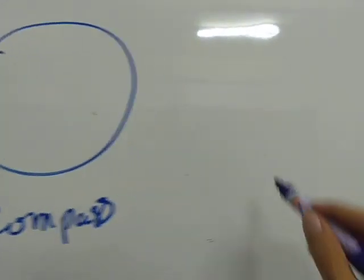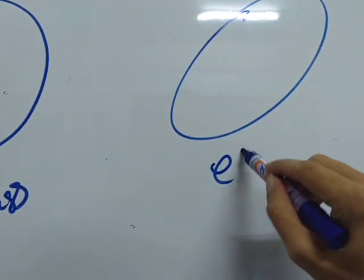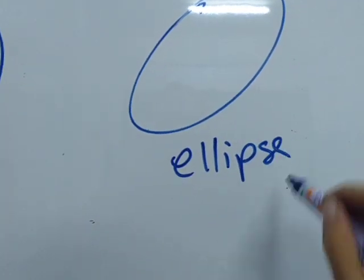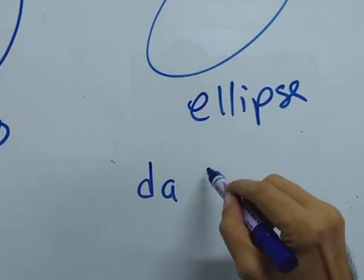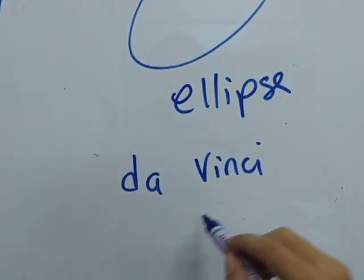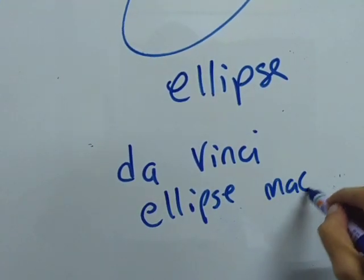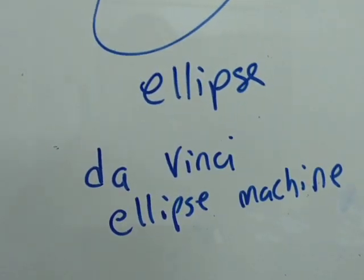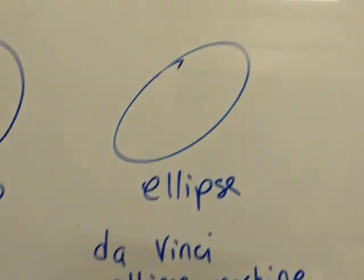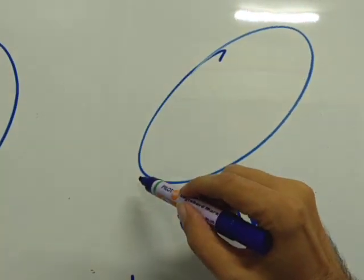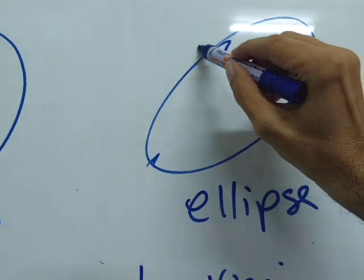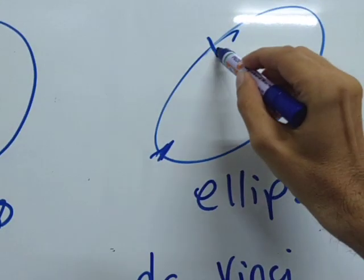And what do you do if you want to draw an ellipse? Well, you use the da Vinci ellipse machine. That's what you use. With the da Vinci ellipse machine, you will be able to draw at least part of an ellipse.